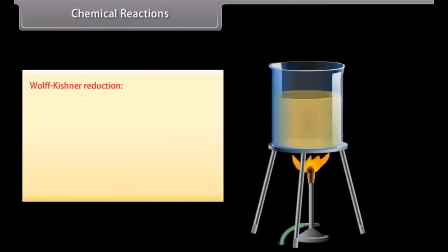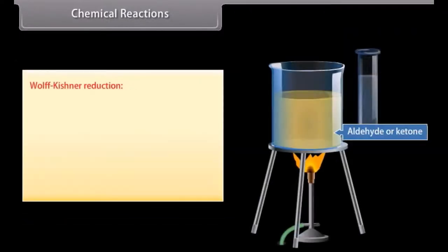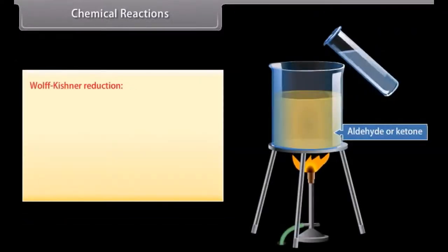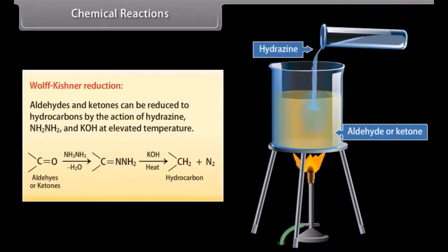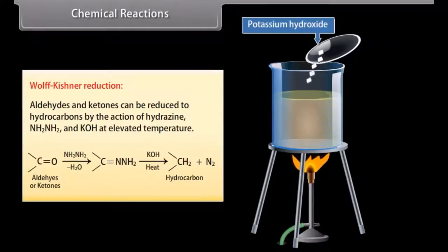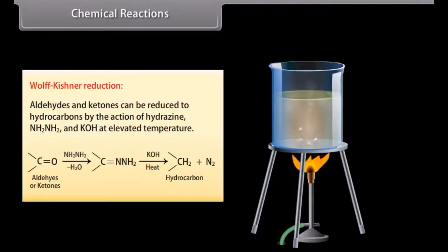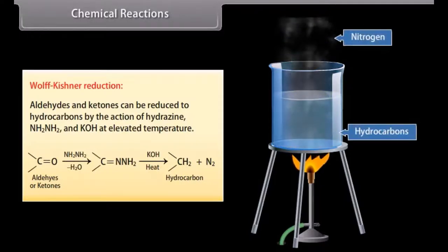Wolf-Kishner reduction: Aldehydes and ketones can be reduced to hydrocarbons by the action of hydrazine and potassium hydroxide at elevated temperature.